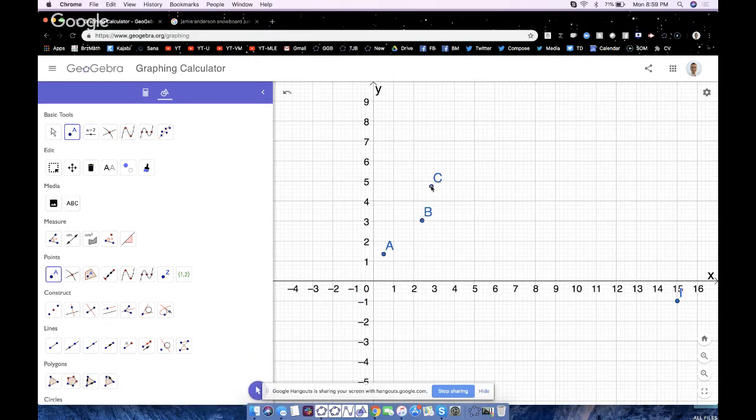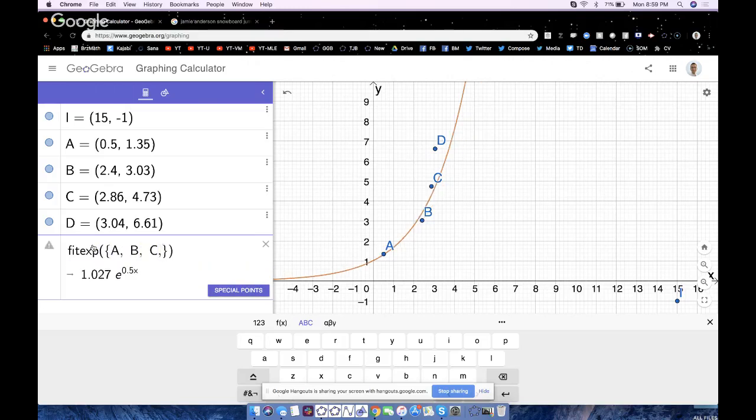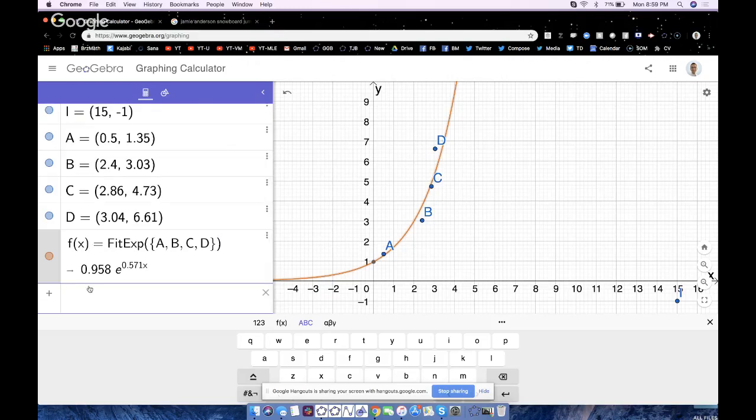Just to show you really quickly, you've got to make this look like it's exponential. Probably is undefined. Let me just kind of put something that looks exponentially tailored here. So if I do fit exp, and I'll just make a list right now. I could use the list tool, but A, B, C, D, there you go. That uses a base of E.